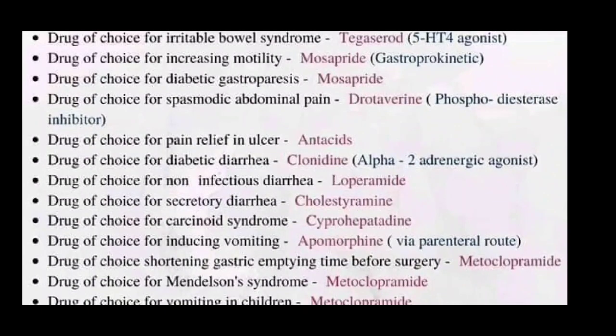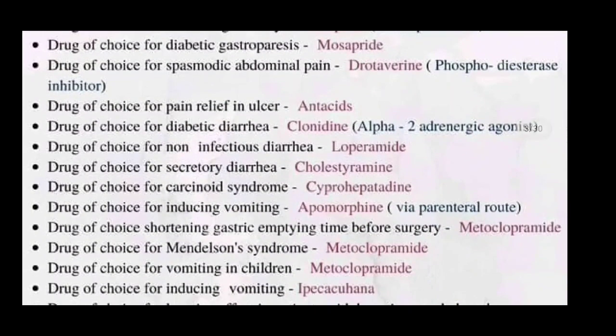Drugs of choice for spasmodic abdominal pain is drotaverine, a phosphodiesterase inhibitor. Drugs of choice for pain relief in ulcer is antacid. Drugs of choice for diabetic diarrhea is clonidine, an alpha-2 adrenergic agonist. Drugs of choice for non-infectious diarrhea is loperamide.